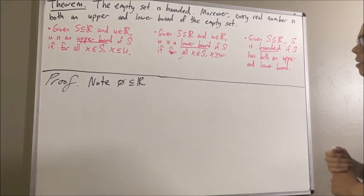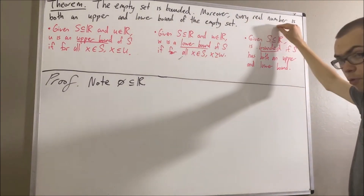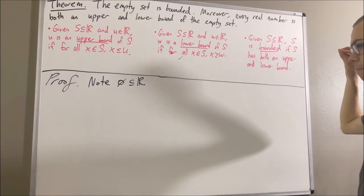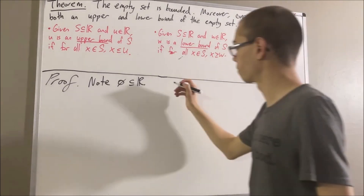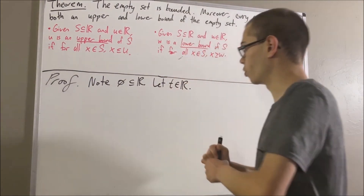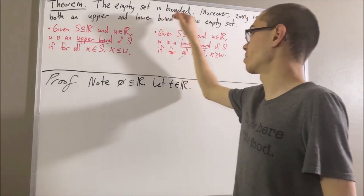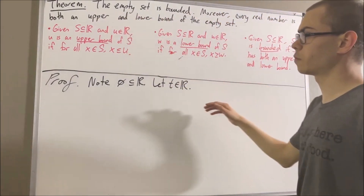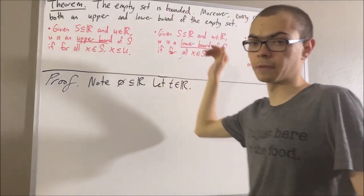So, to do that, we're trying to prove something about every real number, so give an arbitrary real number — I'll call it t. We want to show that t is both an upper and lower bound of the empty set. Let's first show that t is an upper bound of the empty set.